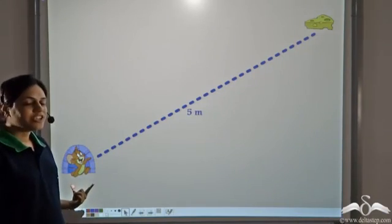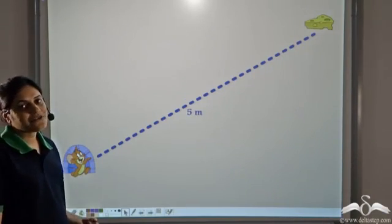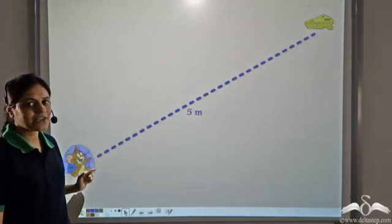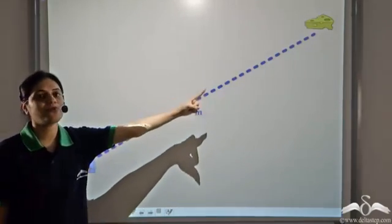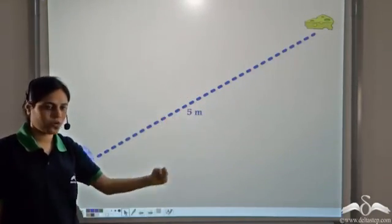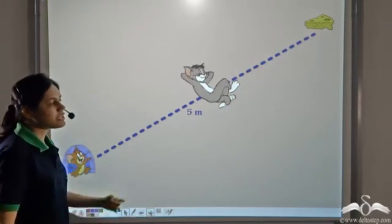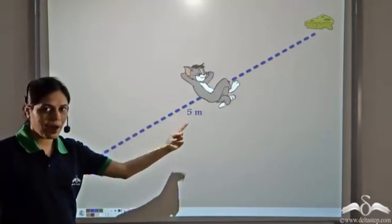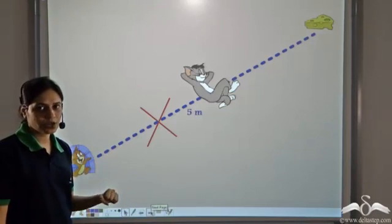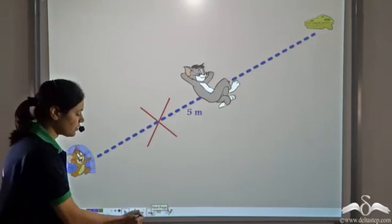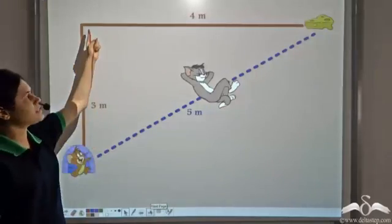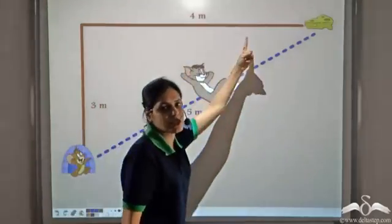We know that Jerry loves cheese. He saw this lump of cheese and decided to go towards it from this path which is five meters long. But then he saw Tom sleeping on this path and he was unable to take this path. So what he did? He took this path which is three meters plus four meters long.